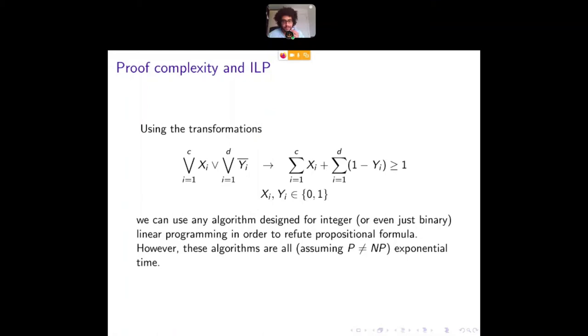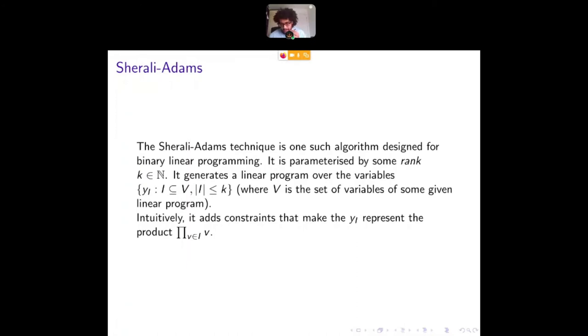So this is what we're working here with, but I guess what I'm saying is we're just working with binary linear inequalities. And one algorithm to attack these things is the Shirali-Adams hierarchy. I'd say it's a hierarchy because it's parameterized by some rank. You choose a rank and there's a trade-off. The higher the rank, the more things that this thing can refute, the more polytopes it can prove empty. But the trade-off is that it takes more time to do so. It actually increases the running time of Shirali-Adams increases quite quickly with the rank because what it does is if you give it a binary linear program over a set of variables V. It generates a linear program over the variables essentially over the subsets of V of size at most K. So this grows quickly with K.